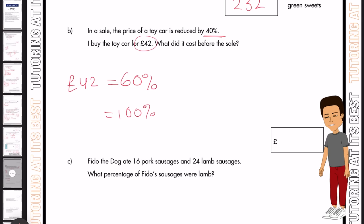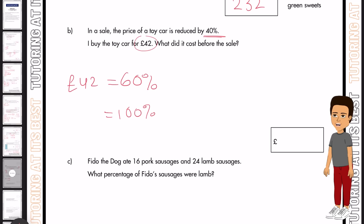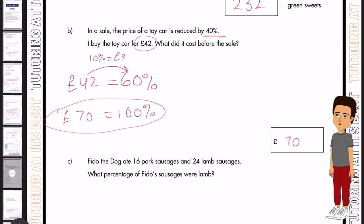So what am I going to do here? Well, I'm going to find out 10%, and that's 42 divided by 6. And that gives us 10%, which is £7. So I'll just write that down. And then I'll times it by 10, and that would be £70 for 100%. And that is my answer.